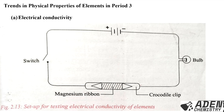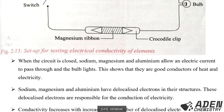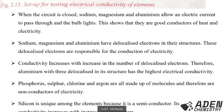Next we look at trends in physical properties of period 3 elements, starting with electrical conductivity. This setup is used for testing electrical conductivity of elements. We place the element being tested in the crocodile clips — for example, a magnesium ribbon. When the circuit is closed, sodium, magnesium, and aluminium allow an electric current to pass through and the bulb lights up, showing they are good conductors of electricity.